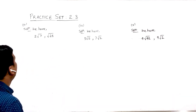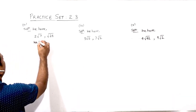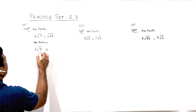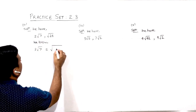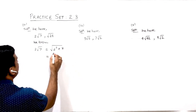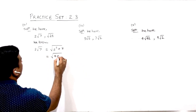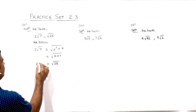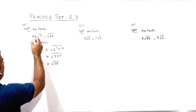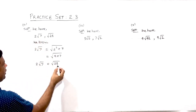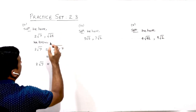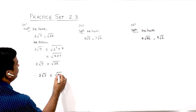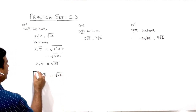Question number three: we need to simplify 2√7. Since the order is 2, this can be written as 2² × 7 = 4 × 7 = 28, so 2√7 = √28. After simplifying, 2√7 equals √28, and the other term is also √28, therefore 2√7 is equal to √28.